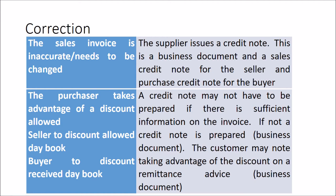If the purchaser takes advantage of a prompt payment discount: for the seller, it goes into the discount allowed day book — the seller is allowing the discount. For the buyer, it goes into the discounts received day book. For the seller, the journal is: debit discounts allowed (an expense), debit VAT (on the reduced net figure), credit the trade receivables control account. For the buyer: credit discounts received, credit VAT, debit the trade payables control account.